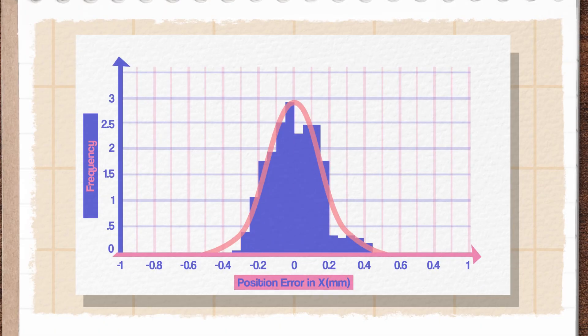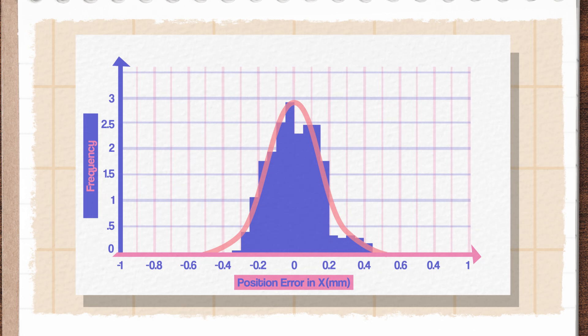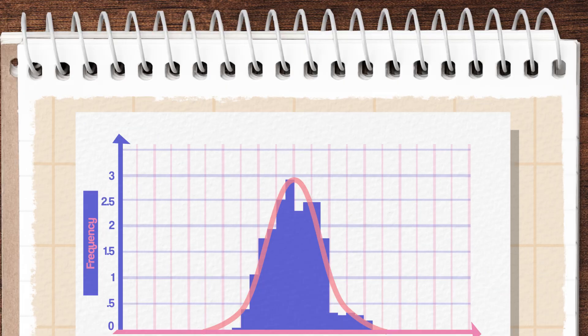We needed many balls to hit multiple pegs before we saw that bell curve pop up — sort of like summoning Bloody Mary, where you have to say her name at least three times. Repeated events where every event happens independently of each other but have the same underlying probabilities follow the bell curve.